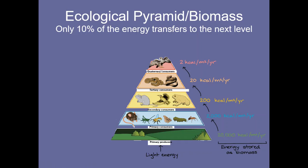In the pyramid it's the same type of thing, just laid out a little differently. At the bottom we have the primary producers, the plants. Then the primary consumers eat the plants, so the arrow goes up. Secondary consumers eat those, arrow goes up. And then the arrow goes up again at each level.